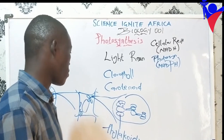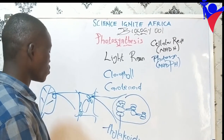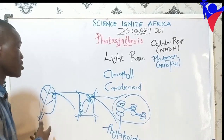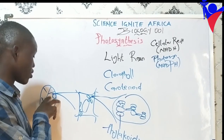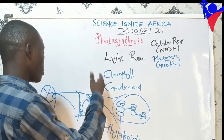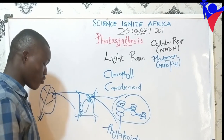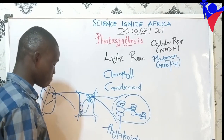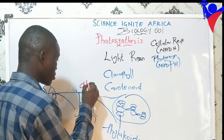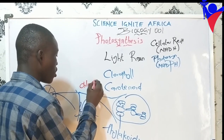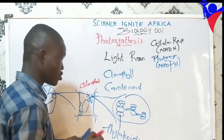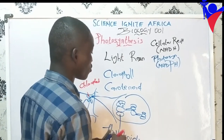Welcome back. We continue from where we stopped. From a leaf, resuming into a cell containing all the different organelles, then once we go to the chloroplast — the chloroplast is what does the actual job of the light reaction of photosynthesis.